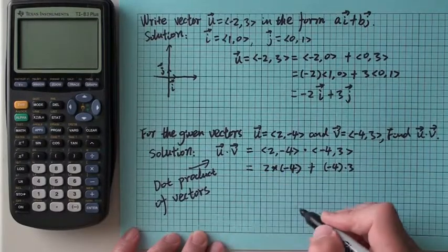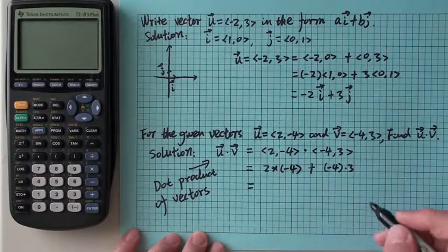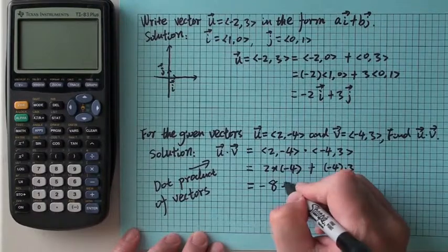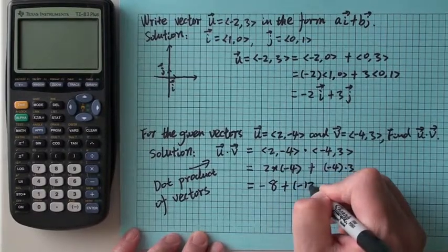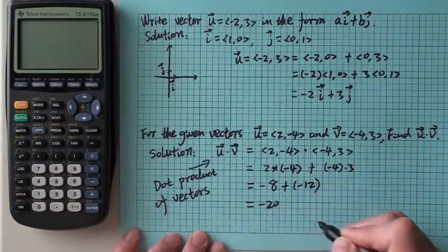So the dot product is not a vector, it's a number. Here 2 times -4 is -8, and here is -12. Add together is -20.